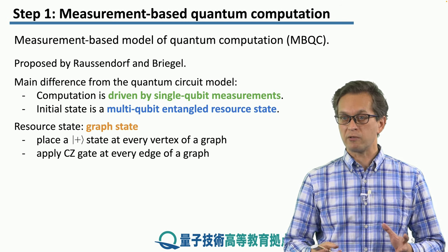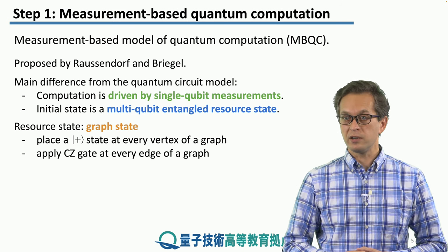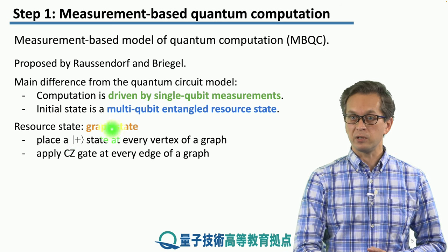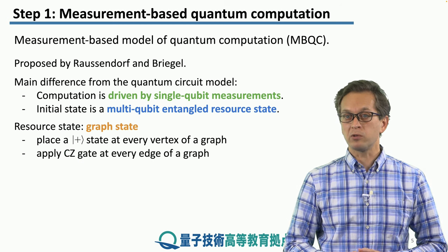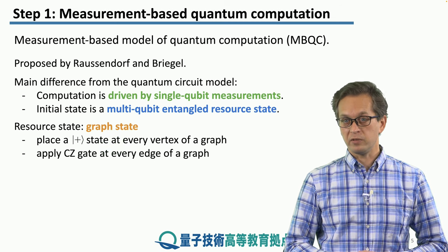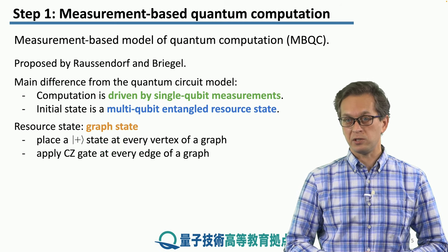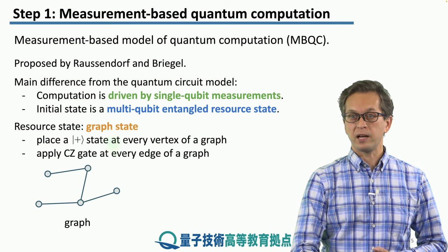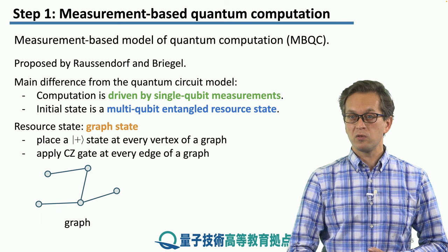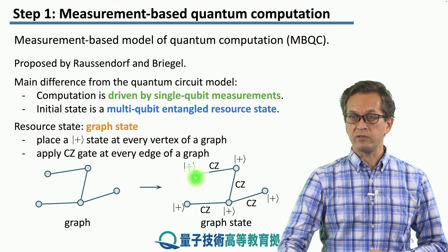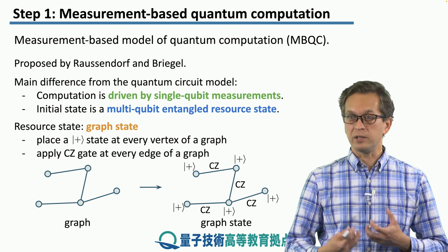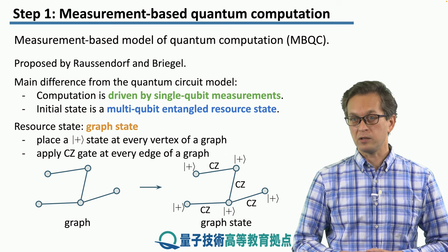To remind you, we start with a graph, which is a set of vertices connected by a set of edges. And at every vertex, we place an equal superposition of the 0 and 1 state. And then we apply control phase gates, these CZ gates, between the vertices of the graph, or between the qubits that are connected by an edge in the graph. For example, we might have the following graph as our underlying topology for our quantum graph state. So, what we do is we place a plus state at every vertex, and for every edge, we apply a control phase gate. And this will entangle our qubits and give us a multipartite entangled resource state.